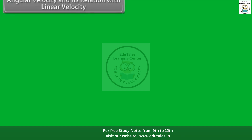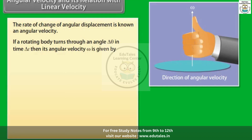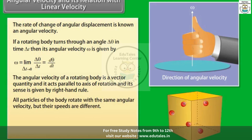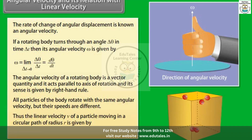The rate of change of angular displacement is known as angular velocity. If a rotating body turns through an angle Δθ in time Δt, then its angular velocity ω is given by ω = lim(Δt→0) Δθ/Δt = dθ/dt. The angular velocity of a rotating body is a vector quantity and acts parallel to the axis of rotation; its sense is given by the right-hand rule. All particles of the body rotate with the same angular velocity, but their linear speeds differ. The linear velocity V of a particle at radius r is given by V = rω.